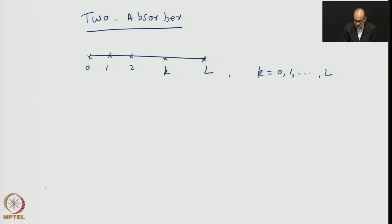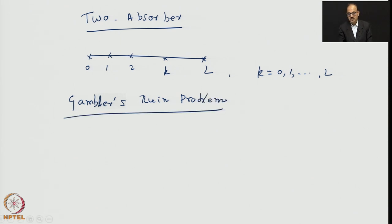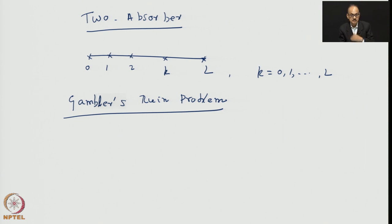Although we called it an absorber problem, traditionally this is called the Gambler's Ruin problem. It is quite interesting to see how one can map a certain mathematical situation to different types of physical problems. Gambler's Ruin is one outstanding example of this feasibility of mapping.